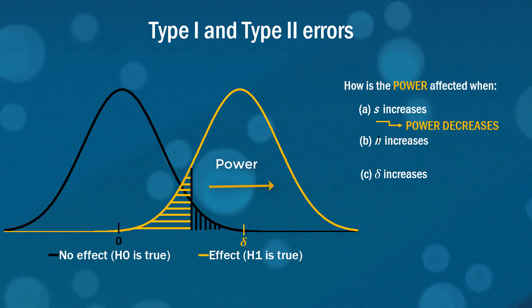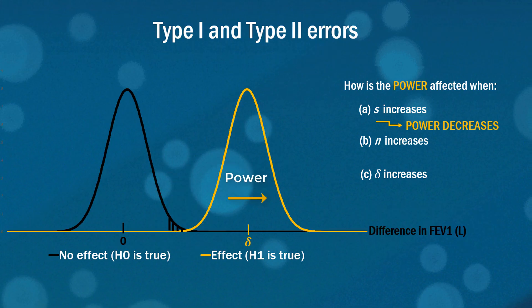Now what happens when N increases, which is your number of observations in the sample? Again pause the video and have a think about how that might play out. But again what happens is that N influences how skinny or fat these curves are going to be and the higher the value of N, the more observations we have, the more confident we are in our sample means so the skinnier these curves are going to be. So if N increases we're going to get skinnier curves. If there's less overlap the power is going to be much larger.